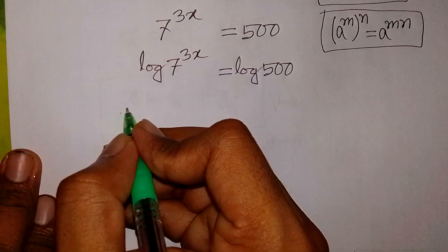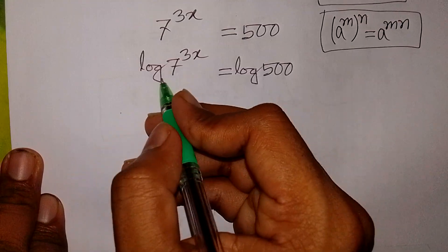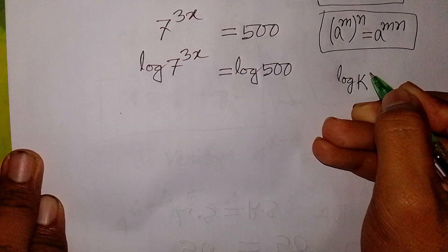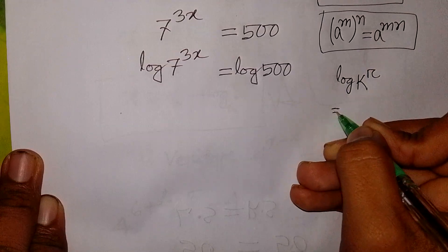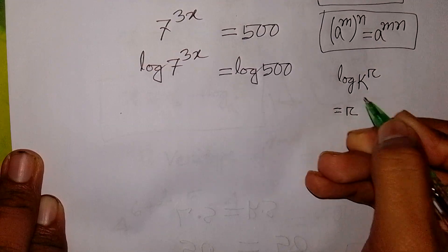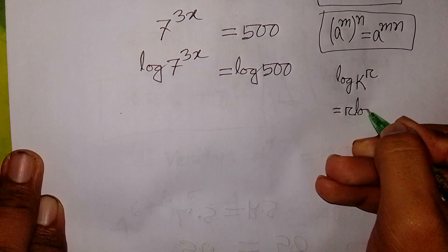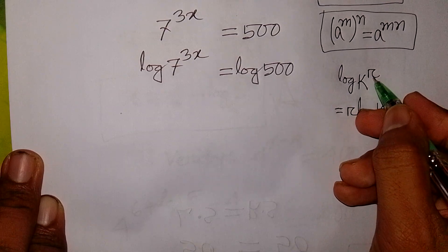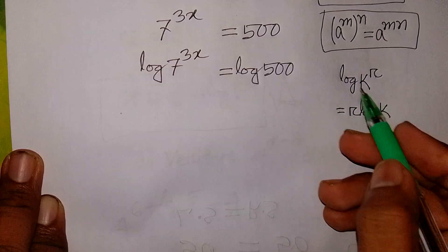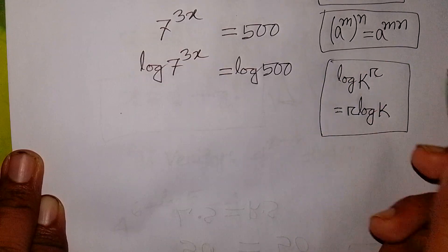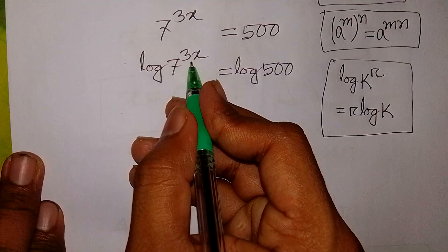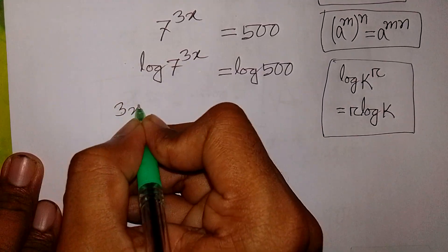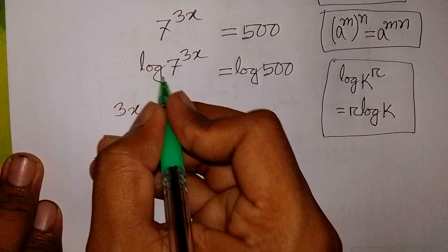We apply the rule log k power r is equal to r·log k — this power r moves to the front. So this power 3x will move to the front, giving us 3x·log 7.